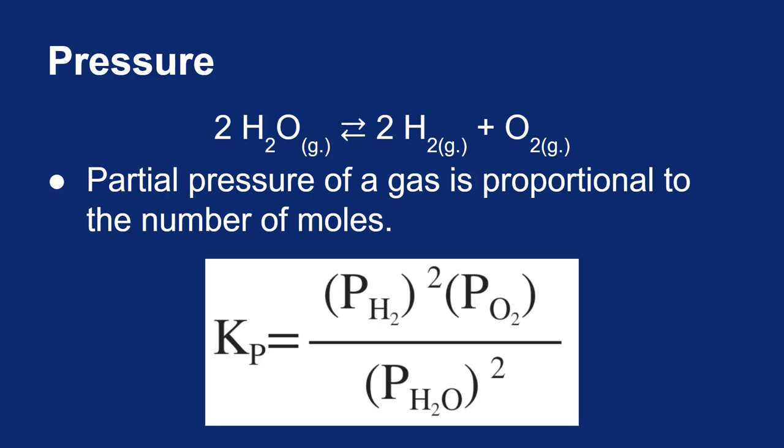When we do this, however, we note that the equilibrium constant isn't based on concentration, it's based on pressure. So that's what that Kp symbol means. It's the constant based on pressure, not concentration.